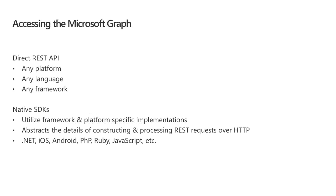There are two ways to access the Microsoft Graph. You can use the direct REST endpoint, which works with any language and any framework on every single platform — the only requirement is being able to make HTTPS requests. Or you can use native SDKs that utilize framework and platform specific implementations like Windows, OSX, iOS, or Android, and abstract the details of constructing and processing HTTP requests. There are SDKs for .NET, iOS, Android, PHP, Ruby, and JavaScript. If you check graph.microsoft.com you'll see a list of all the SDKs.